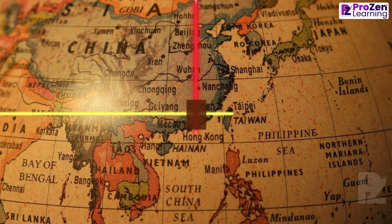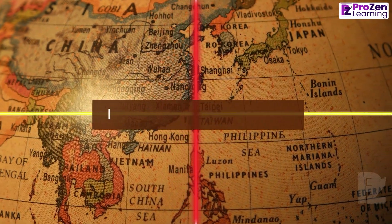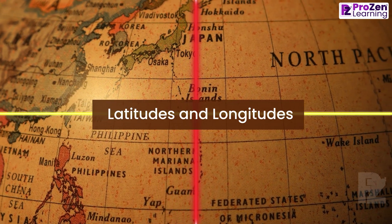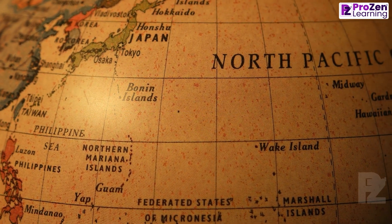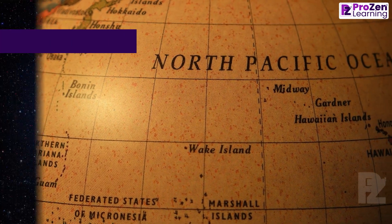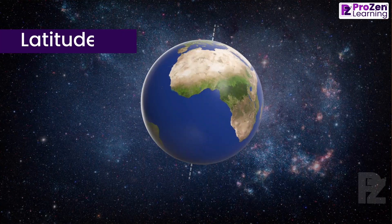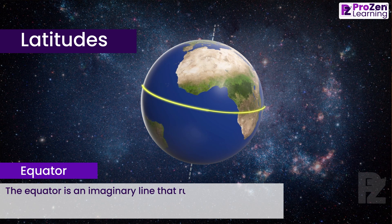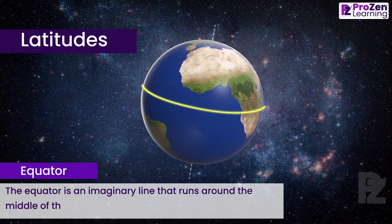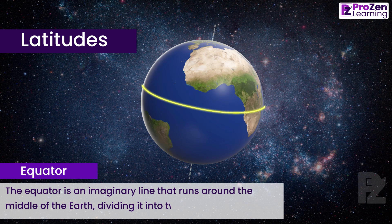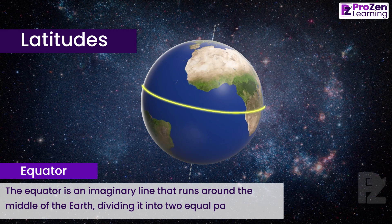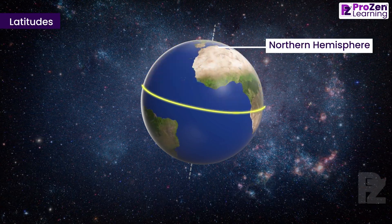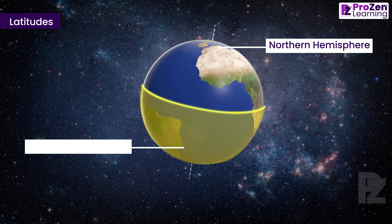Hello students! Today we will learn about latitudes and longitudes, two crucial components for understanding Earth's geography and timekeeping. Let's begin with latitudes. The equator is an imaginary line that runs around the middle of the Earth, dividing it into two equal parts. The northern half is called the Northern Hemisphere, while the southern half is known as the Southern Hemisphere.